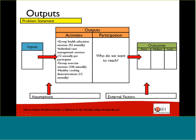For participation, think about who we want to reach. Are there any specific subpopulations, such as ages, genders, or health status? And how many people do we want to reach with our given resources? For our example, we may want to reach 75 American Indian and Alaska Native adults, ages 55 or older, who do not have a CVD diagnosis but have at least one CVD risk factor. It's important to remember that a logic model should be dynamic and change with the needs of the program. For example, we have healthy cooking demonstrations as an activity, but we don't have kitchen equipment as an input, so we'll have to go back to update the inputs to match the activities that we have planned.